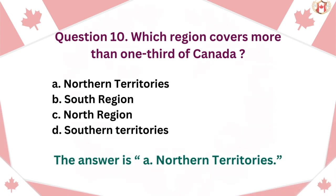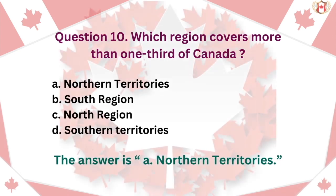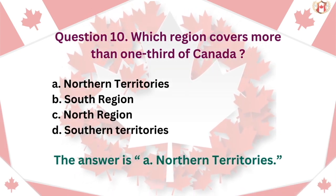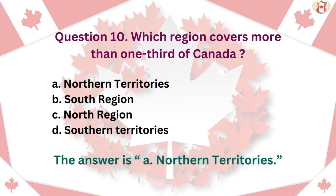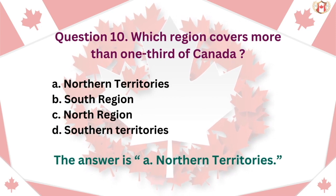Question 10: Which region covers more than one-third of Canada? A. Northern Territories, B. South region, C. North region, D. Southern territories. The answer is A. Northern Territories.